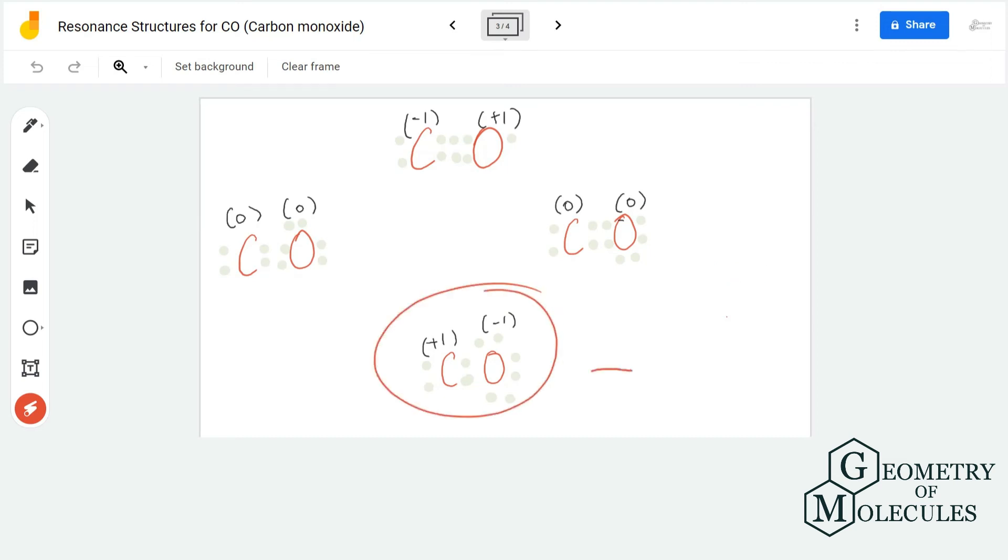But generally we go with the first one, the one which has a triple bond between carbon and oxygen. So these are the resonance structures of carbon monoxide.